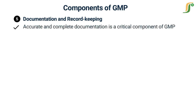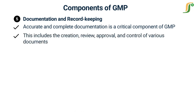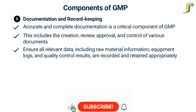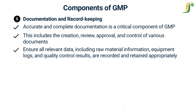The fifth component is Documentation and Record Keeping. Accurate and complete documentation is a critical component of GMP. This includes the creation, review, approval, and control of various documents such as batch records, standard operating procedures, specifications, protocols, and reports. GMP also requires robust record-keeping practices, ensuring that all relevant data including raw material information, equipment logs, and quality control results are recorded and retained appropriately.